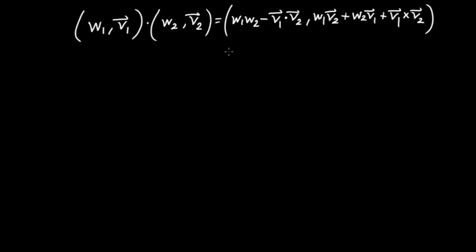So if I have these two quaternions, the formula for multiplying them using vector analysis is: the new scalar part is W1·W2 minus V1 dot V2, and the new vector part is given by W1 times V2 plus W2 times V1 plus the vector V1 cross V2. That's the formula we've just obtained.